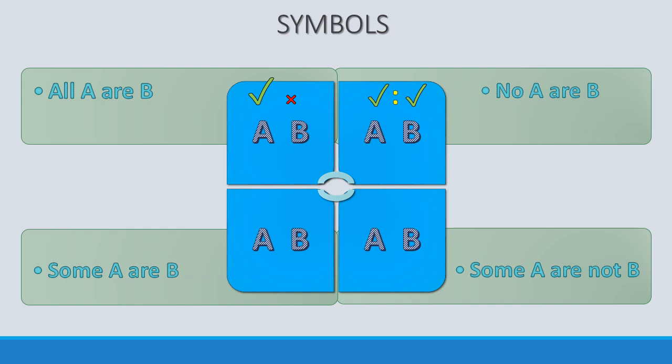The next type, 'Some A are not B', means we have taken a subset of A to check against the complete set of B and there was no match. It is a negative sentence, so the symbols will be a cross over A and a tick over B, with a colon in between. The last type, 'Some A are B', means a subset of A belongs to a subset of B, so the symbols will be a cross over both A and B.